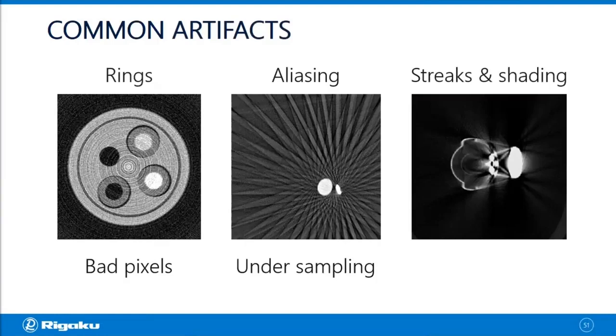Streaks and shading usually come from what's called beam hardening, and this one is a little bit trickier to get rid of.